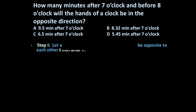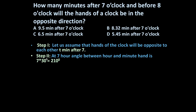Step 1: Assume the hands of the clock will be opposite to each other t minutes after 7 o'clock. Step 2: At 7 o'clock, the angle between the hour and minute hand is 7 × 30 degrees, because at every hour the angle between them is 30 degrees. So at exactly 7 o'clock the angle between the hour and minute hand is 7 × 30 = 210 degrees.